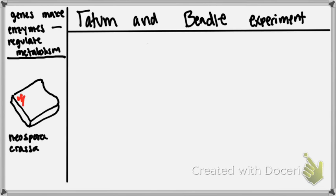In this video, we're going to be looking at Edward Tatum and George Beadle in the experiment that they did. The ultimate goal of what they were looking for is actually to just see that they found that one gene made one enzyme. Or another way of saying it is that genes make enzymes, and those enzymes regulate metabolism.